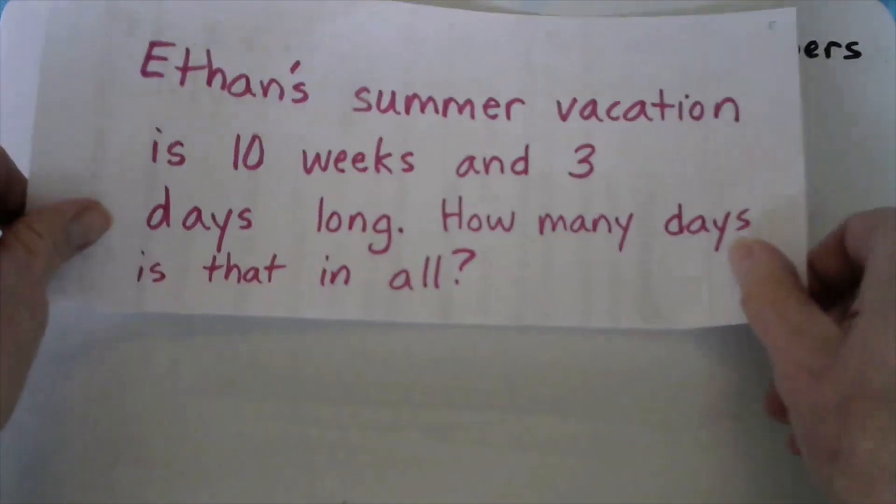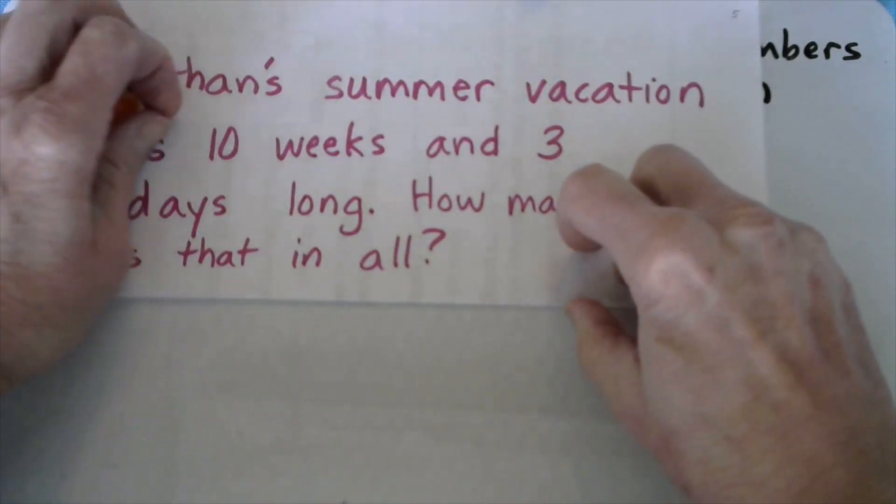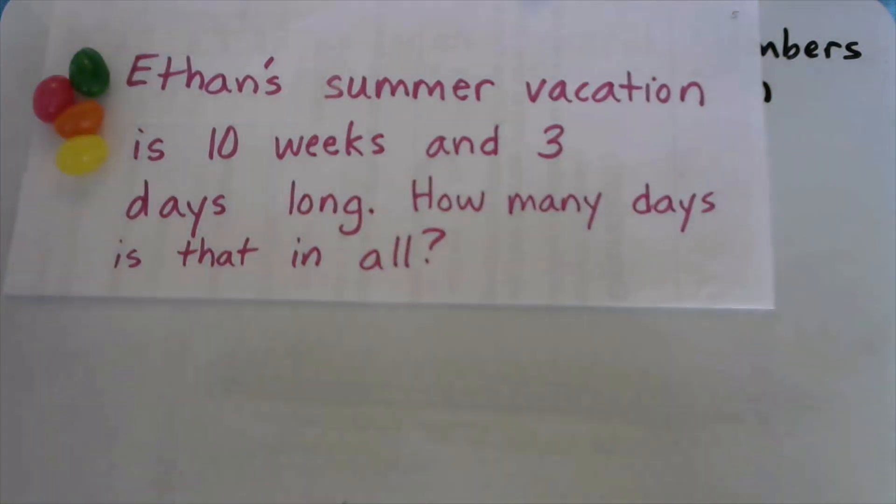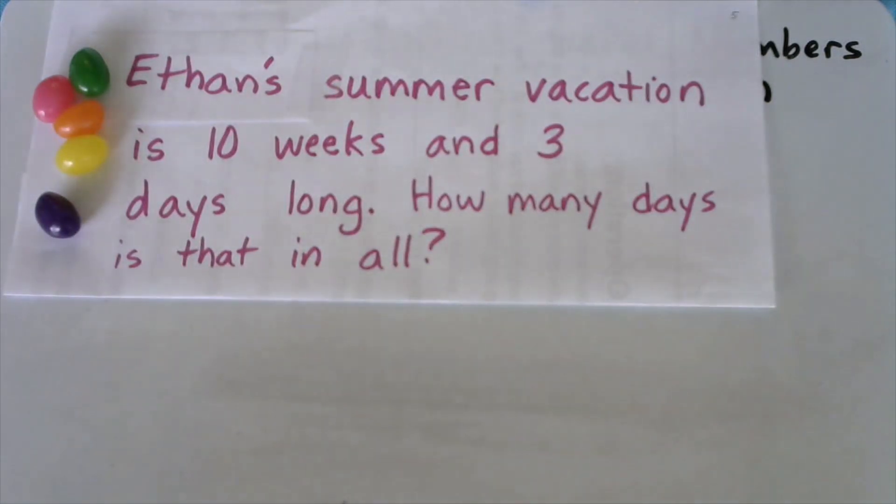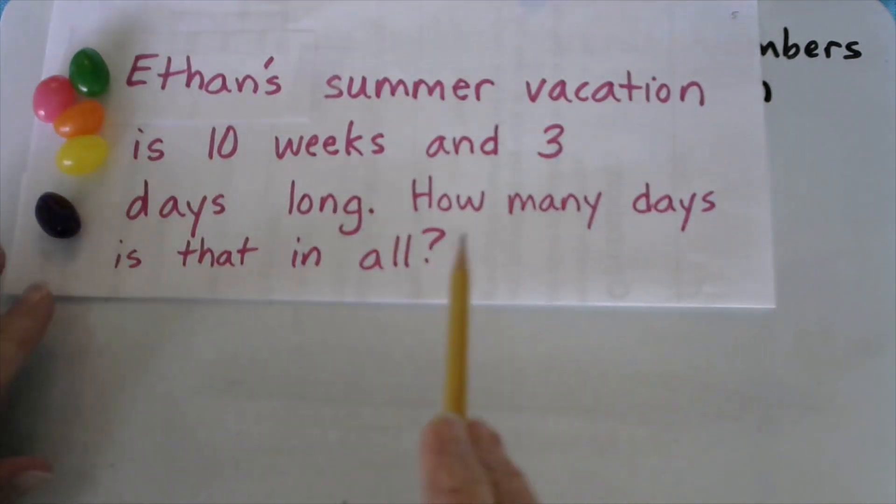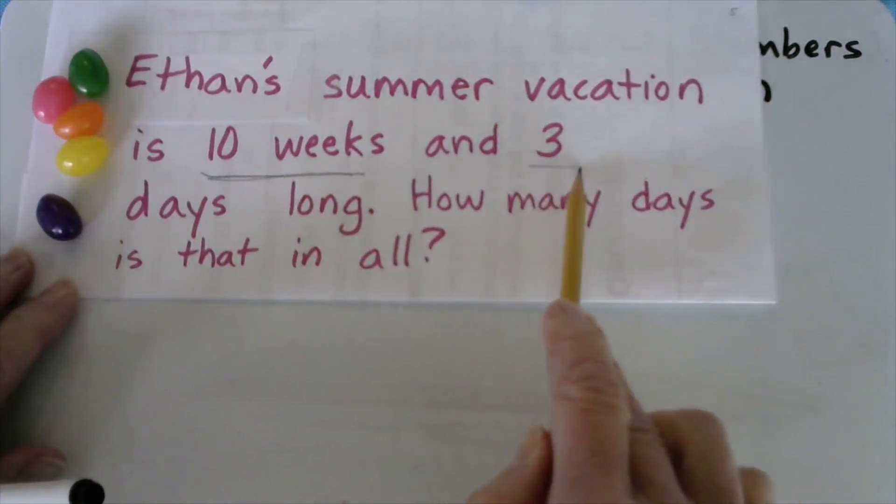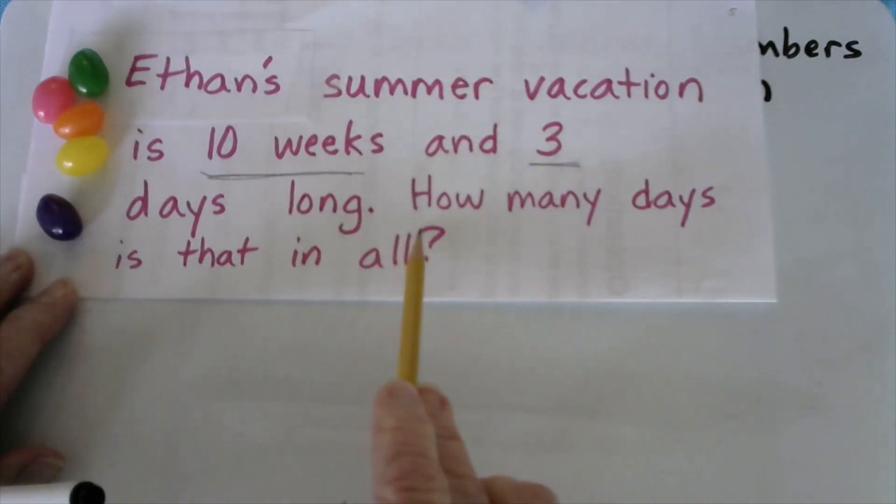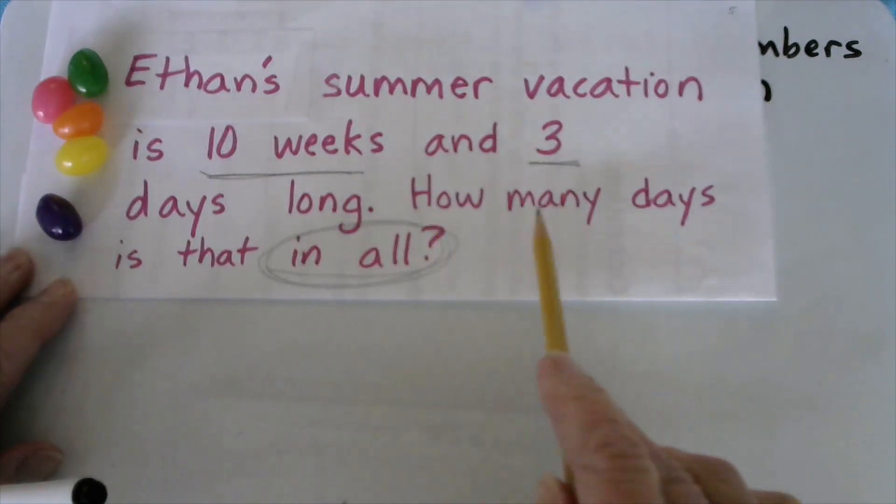They're going to be getting a little more complex. We have two more to go. We're going to read about Ethan with jelly beans weighting it down. Ethan's summer vacation is 10 weeks and 3 days long. That is a nice long summer vacation. How many days is that in all? So let's understand and make a plan. He gets 10 weeks off plus 3 extra days. And the problem is asking us how many days in all. There's a clue to the operation. And there's even a clue as to the unit they're asking for. How many days?